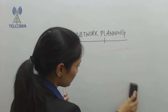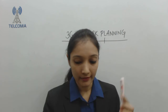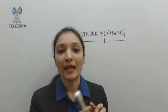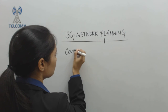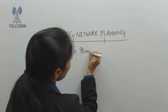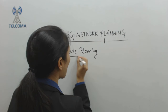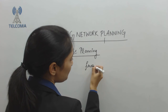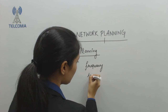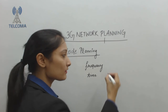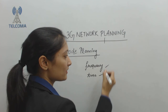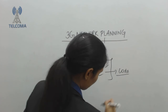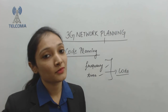Another important parameter in 3G network planning is code planning. Our 3G system is based on codes because users share the same frequency and time. The criterion used to distinguish users is the code — each user in the 3G network has its own code on the basis of which they are identified.